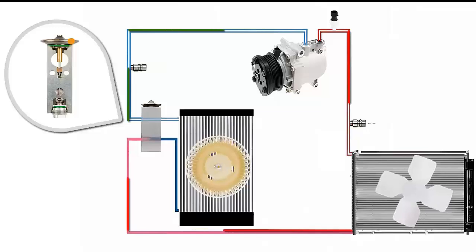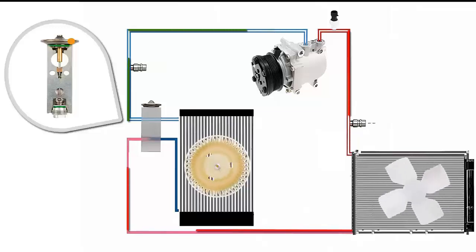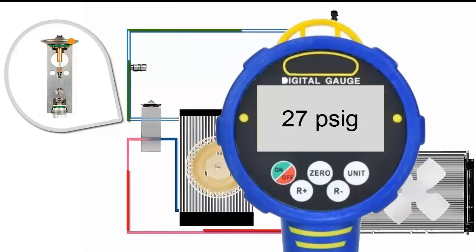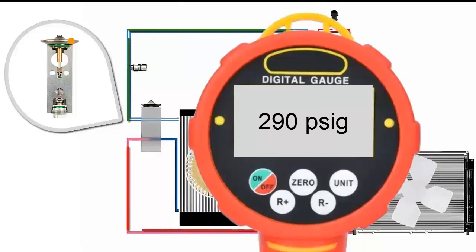Abnormal pressures. A blocked or partially closed valve can lead to low pressure on the low side and high pressure on the high side, reducing system efficiency and increasing the risk of compressor damage.